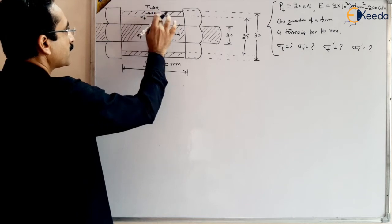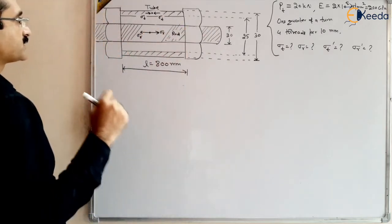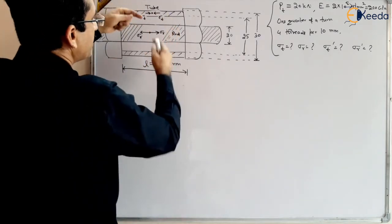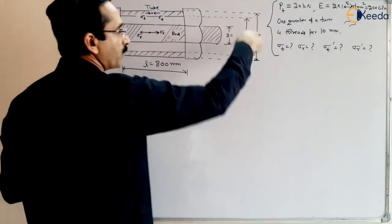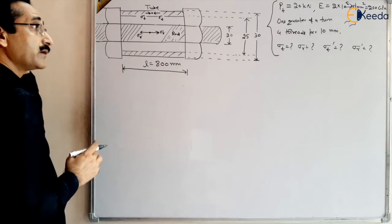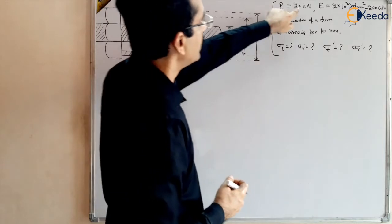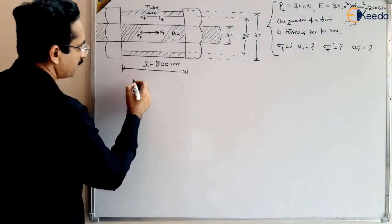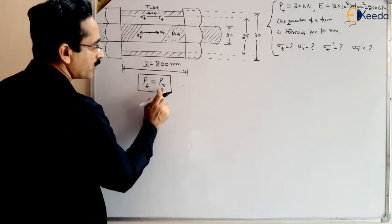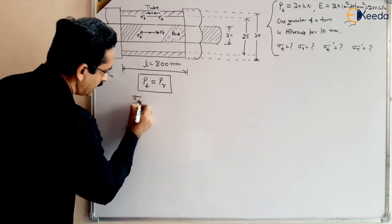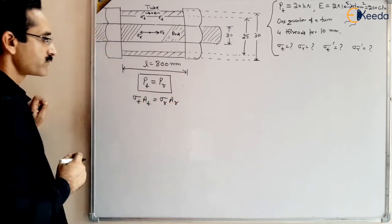Compressive stress develops in the tube (σ_t) and tensile stress develops in the rod. Since no external force is applied, these two forces must be equal in magnitude. The areas of the tube and rod can be obtained from the given dimensions. So by equilibrium, the load in the tube must equal the load in the rod in magnitude. We can write: σ_t × A_t = σ_r × A_r.